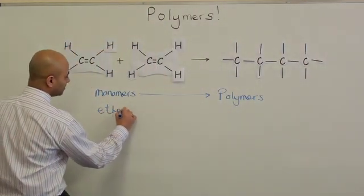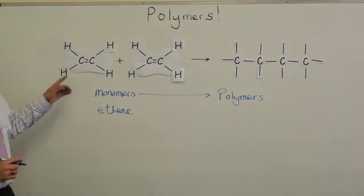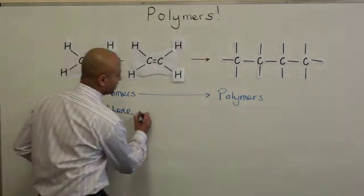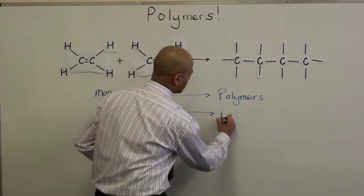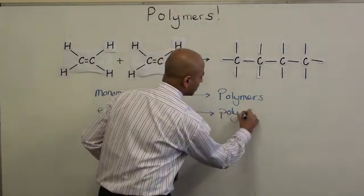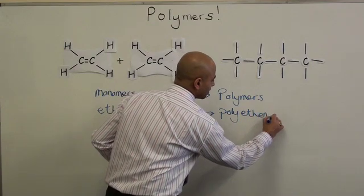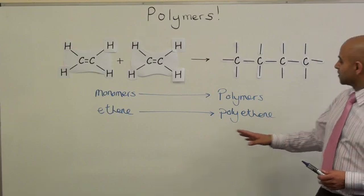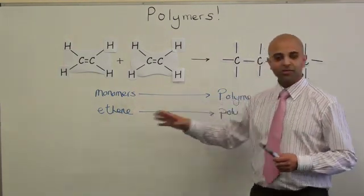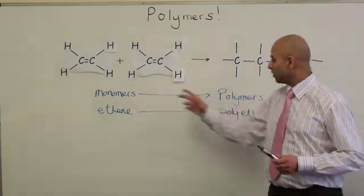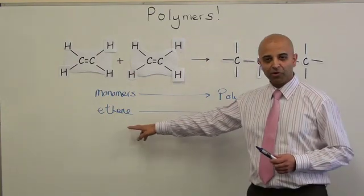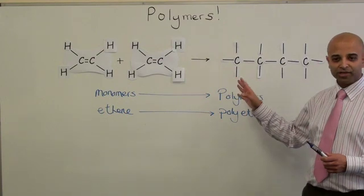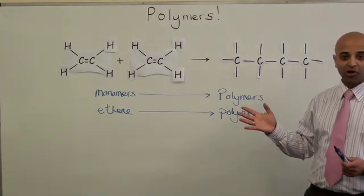So for writing ethene, these both are ethene monomers. Ethene goes to form polyethene. The terms they use in the exam will be monomer to polymer, so it will be ethene monomer to form polyethene.